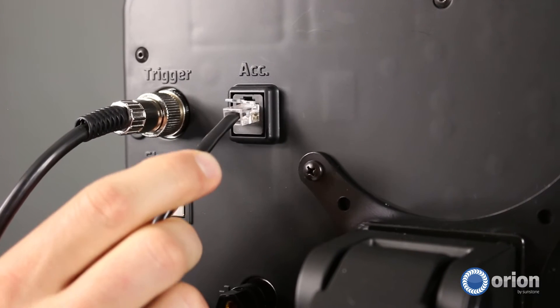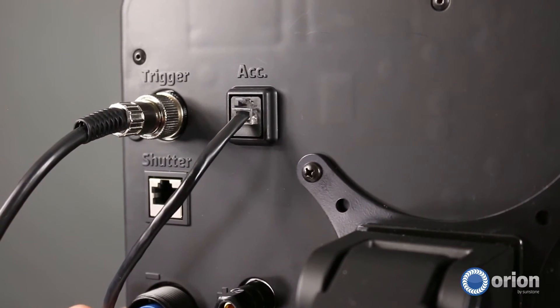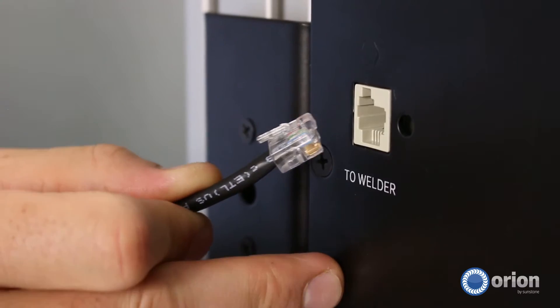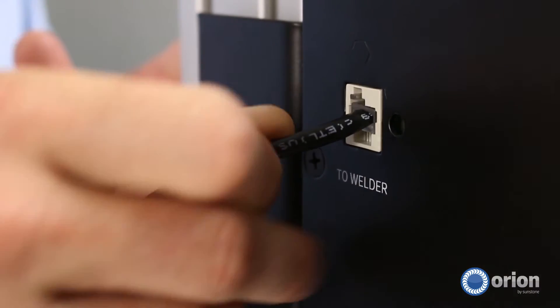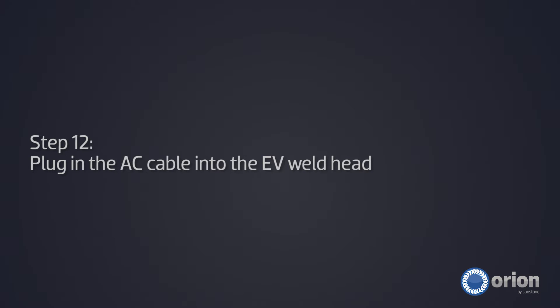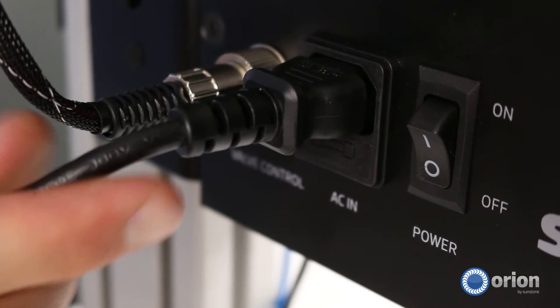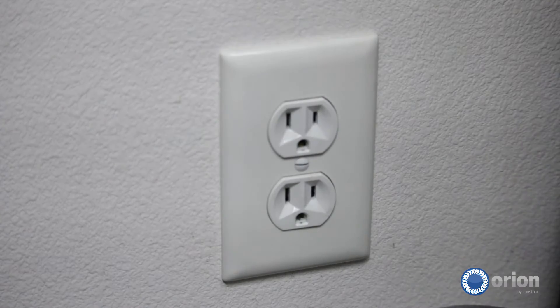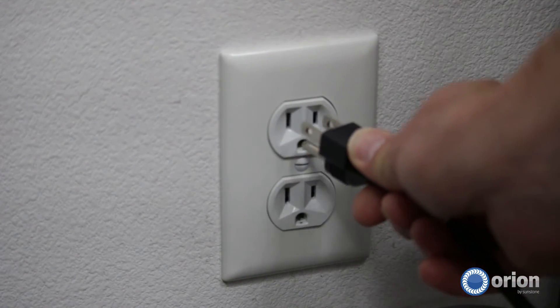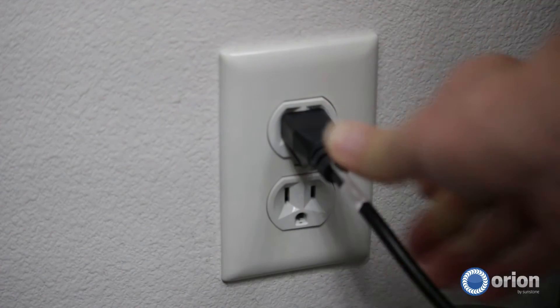Plug the RJ45 end of the cable into the welder and the RJ11 end of the cable into the weld head. Plug the AC power cable into the side of the weld head, then plug the other end into any standard 110 to 220 VAC outlet.